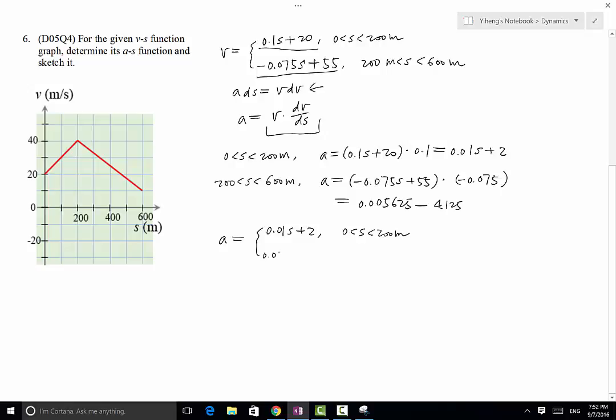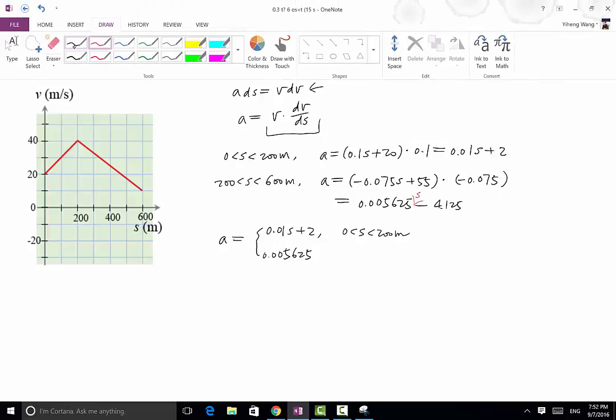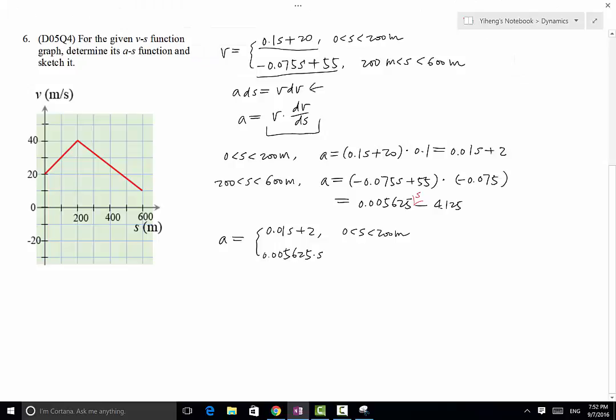The second equation is 0.005625s... excuse me, I have an s here. I forgot an s. The second equation is 0.005625s minus 4.125. And this is when s is between 200 and 600 meter.